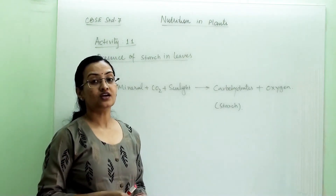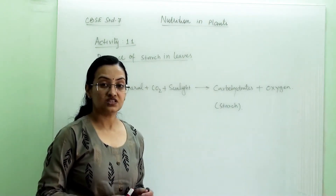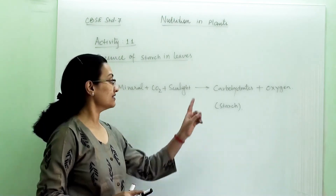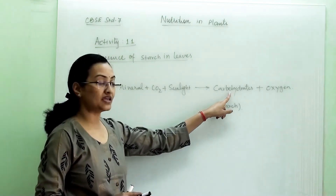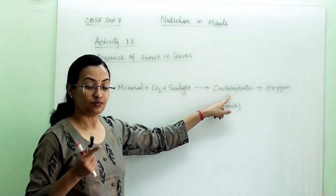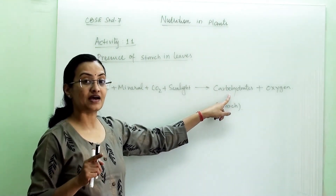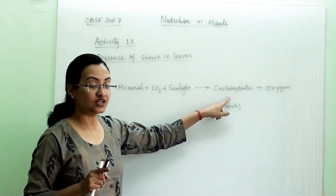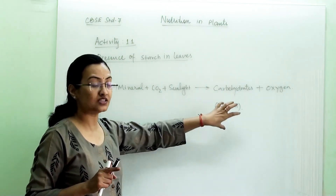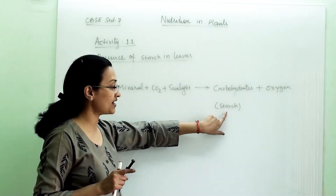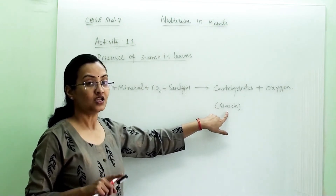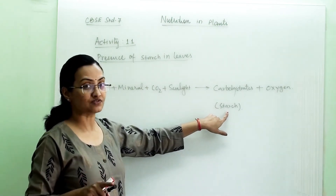When we talk about the photosynthesis process, we know that plants are making carbohydrates. The plant prepares its food in the form of carbohydrates and stores this carbohydrate in the form of starch into the leaves.